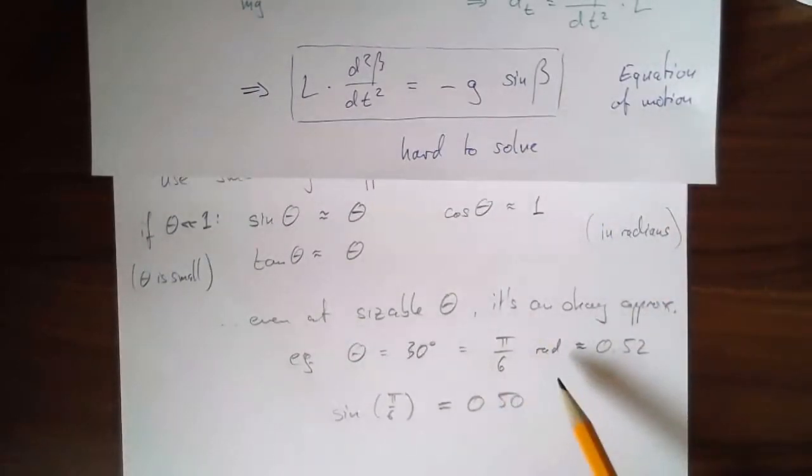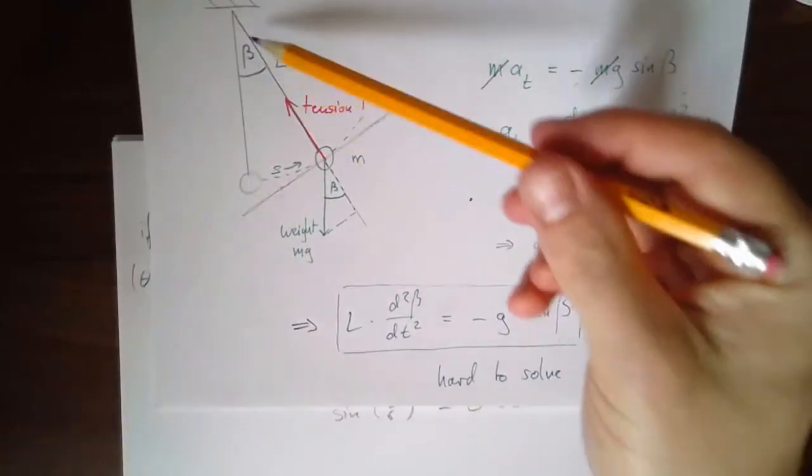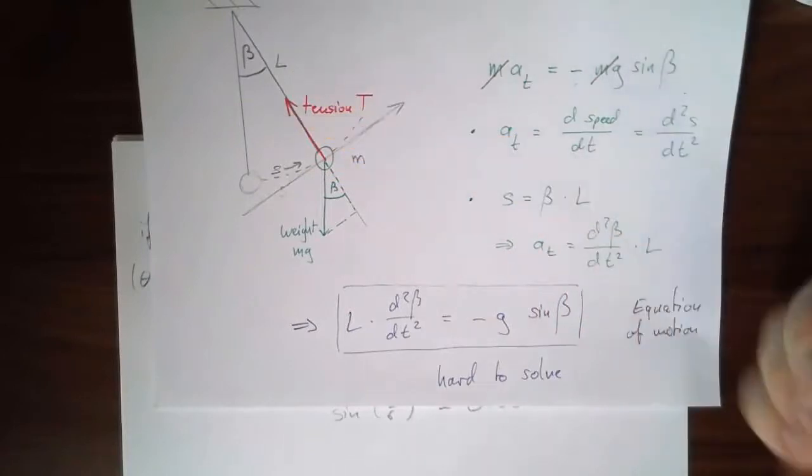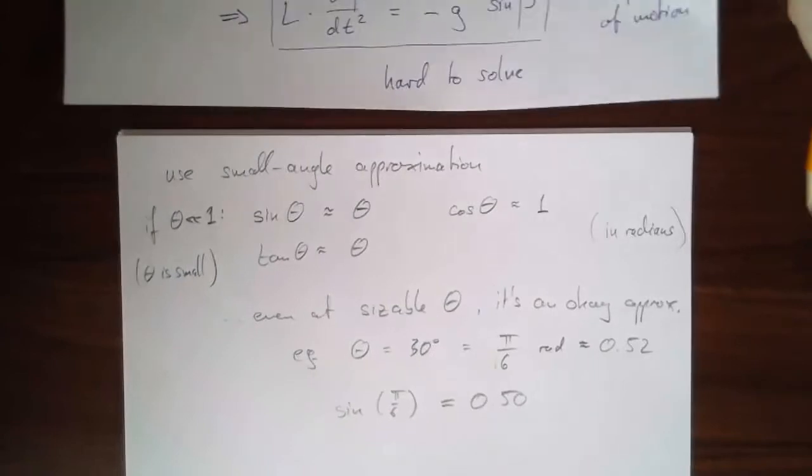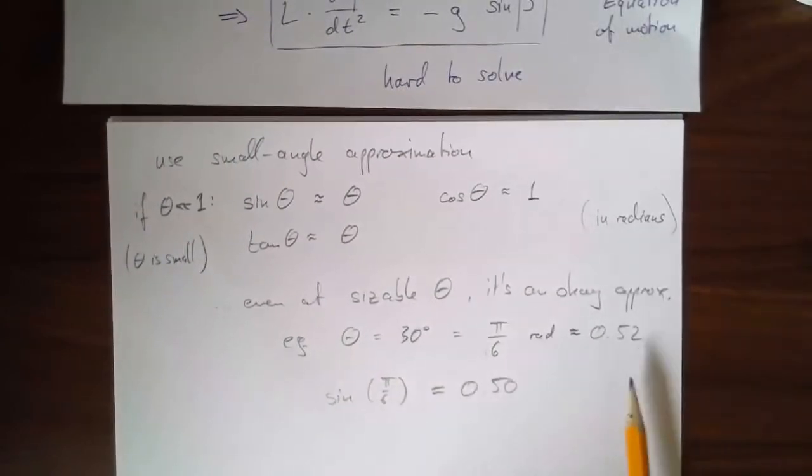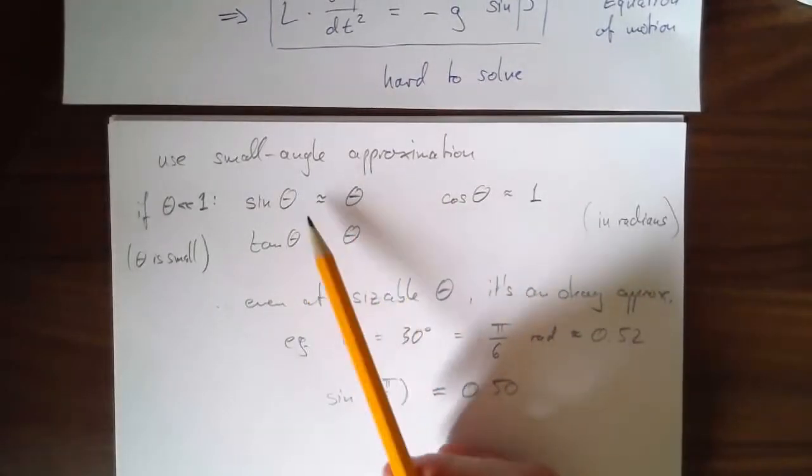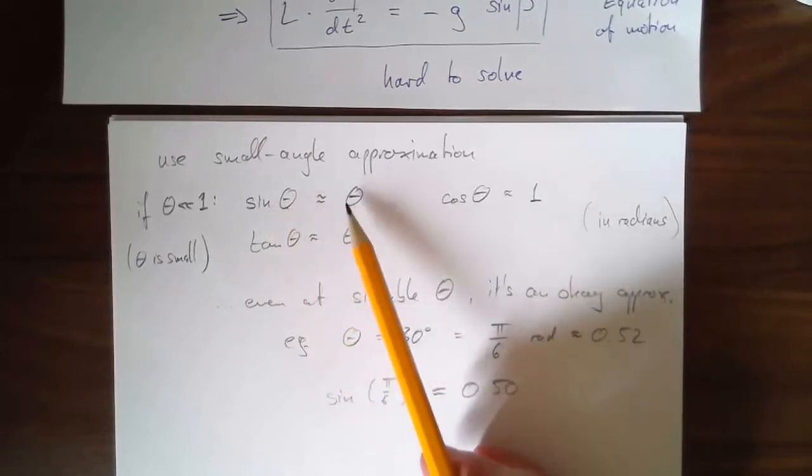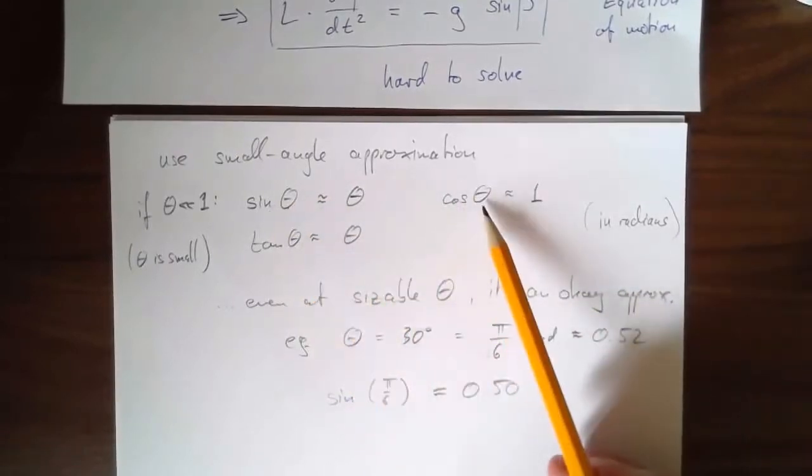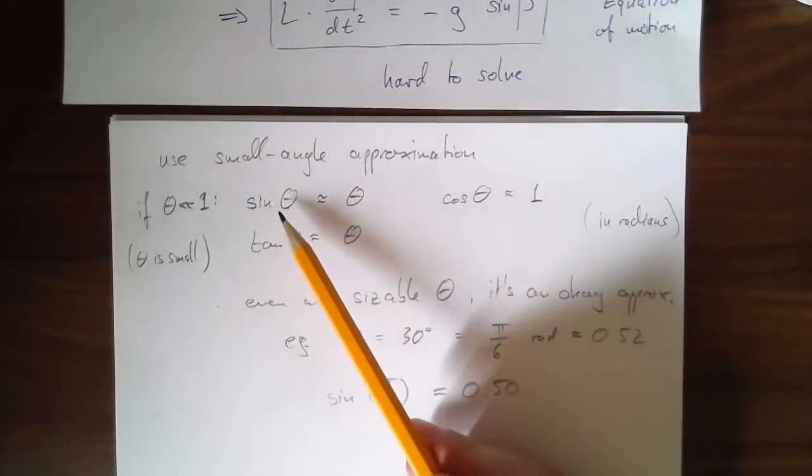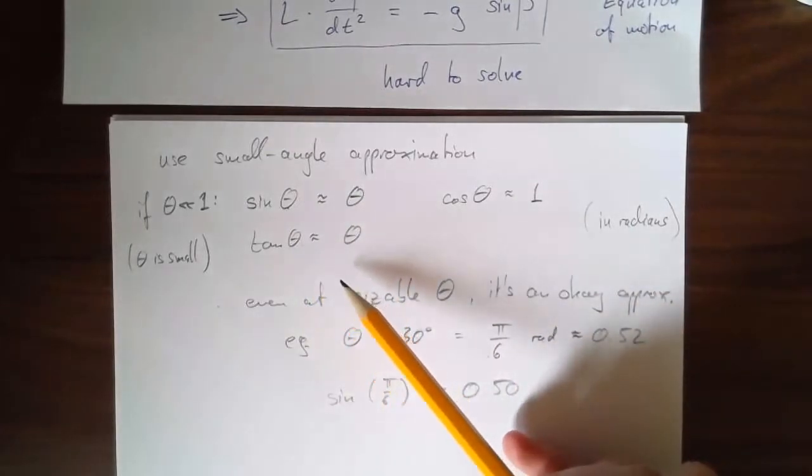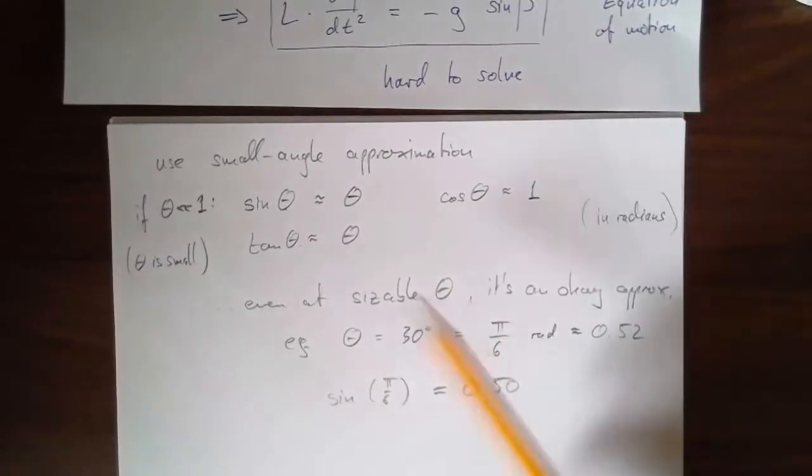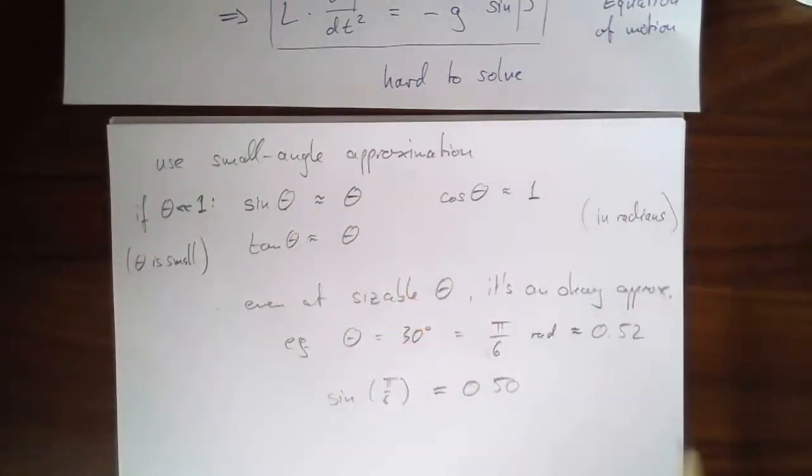Now, you should try, if you haven't done that before ever, actually just play with this. Plug in some very small values. Try 0.1 radians. What's sine of 0.1 radians? What's tan of 0.1 radians? What's cosine of 0.1 radians? What's sine of 0.01 radians? What's tan of 0.01 radians? Try it. It's something you just need to get a feel for, so you understand that this is not something that's just plugged out of thin air.